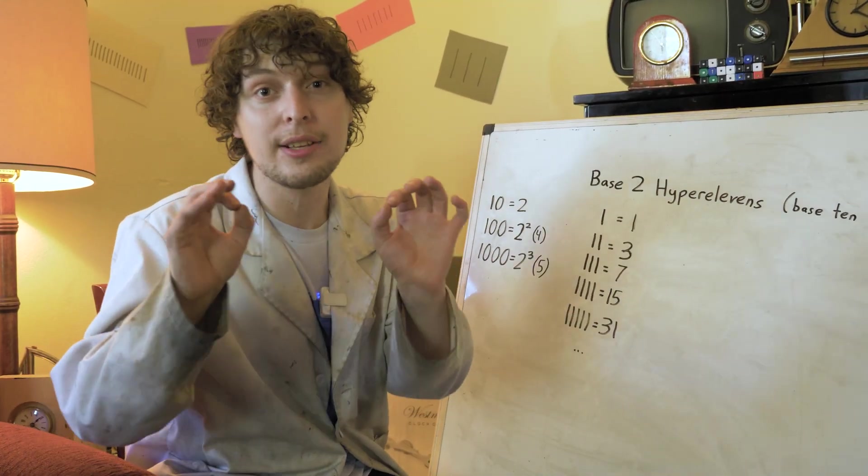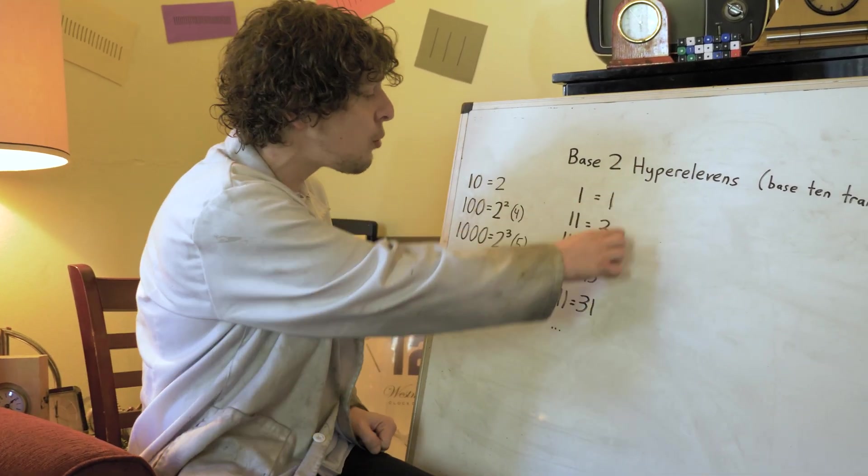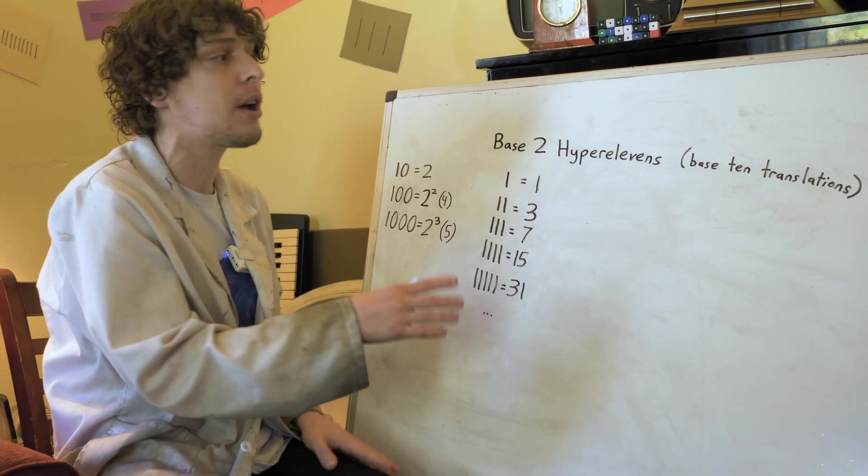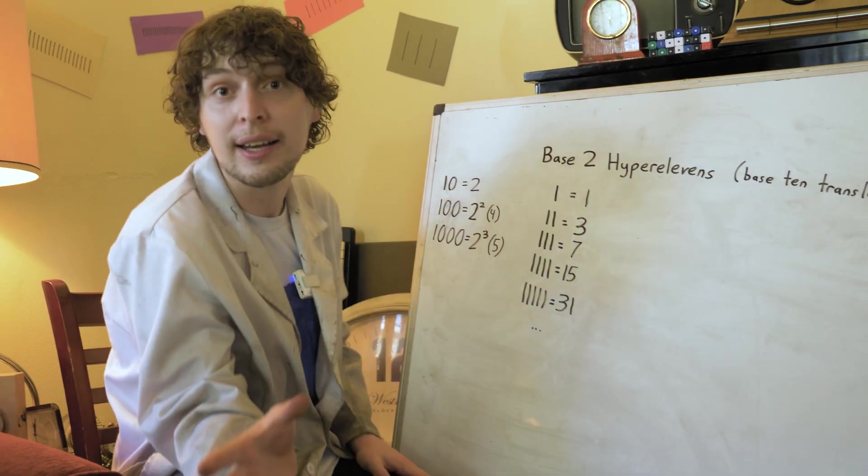All right, zooming into base two, because binary hyper 11s are by far the most important. Let's look at the ones leading up to that 31 we saw a minute ago. Here's our base 10 versions and here's how they look in binary.